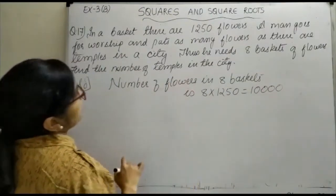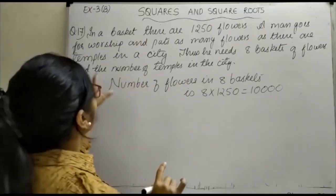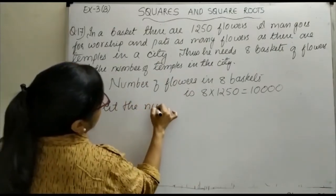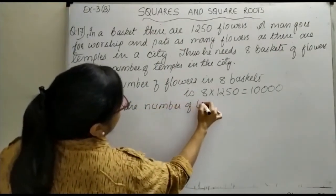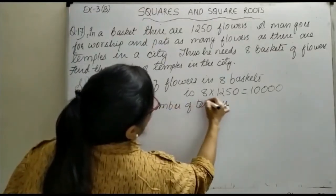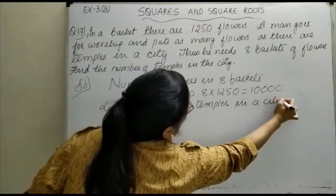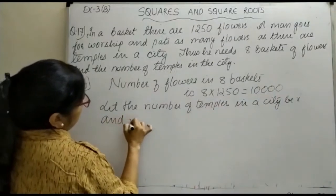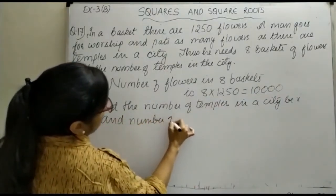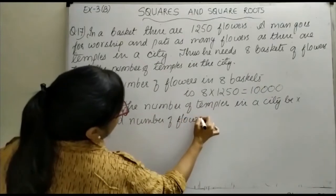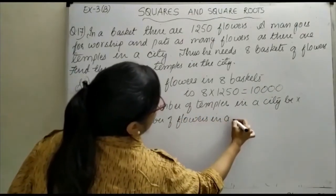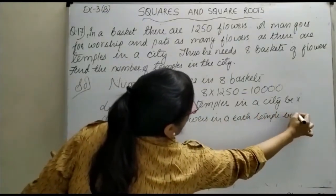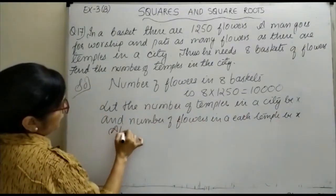Now start the solution from what is asked in the question: find the number of temples in the city. Let the number of temples in the city be x, and the number of flowers placed in each temple also be x.